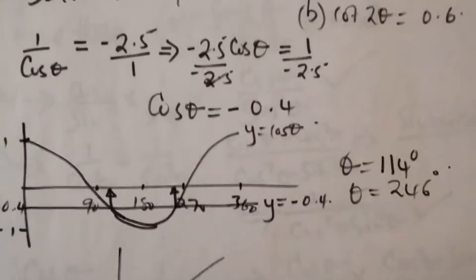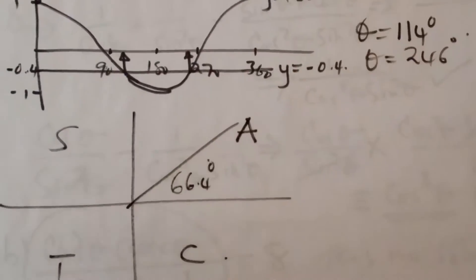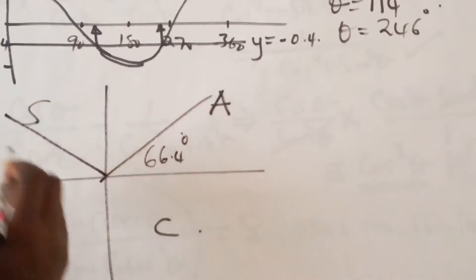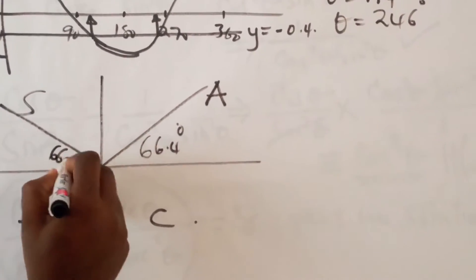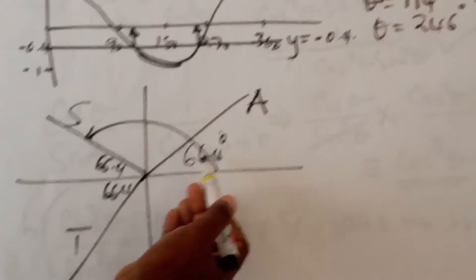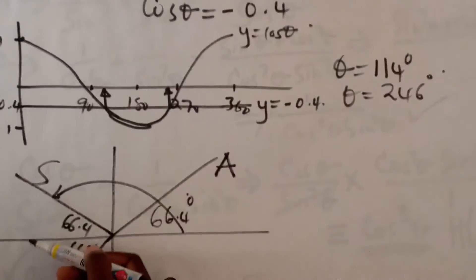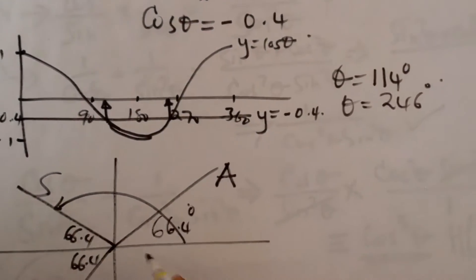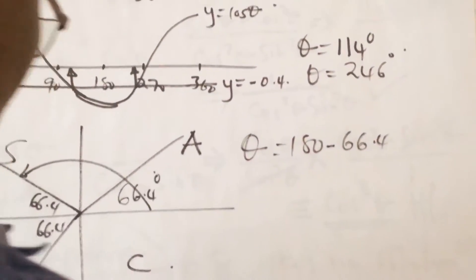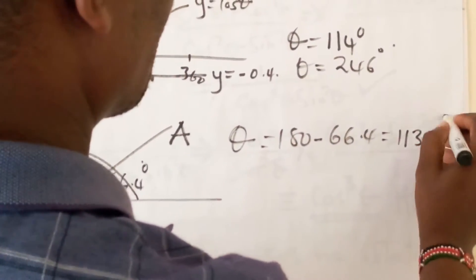But remember, it is negative. So if we follow the rule of all science teachers complain, then we realize that cosine is positive here and here. So we are having our angle in the second quadrant, 66.4, and in the third quadrant. What is one value of theta? If you are considering the angle in the second quadrant, 180 minus 66.4, which gives us 113.6 degrees.